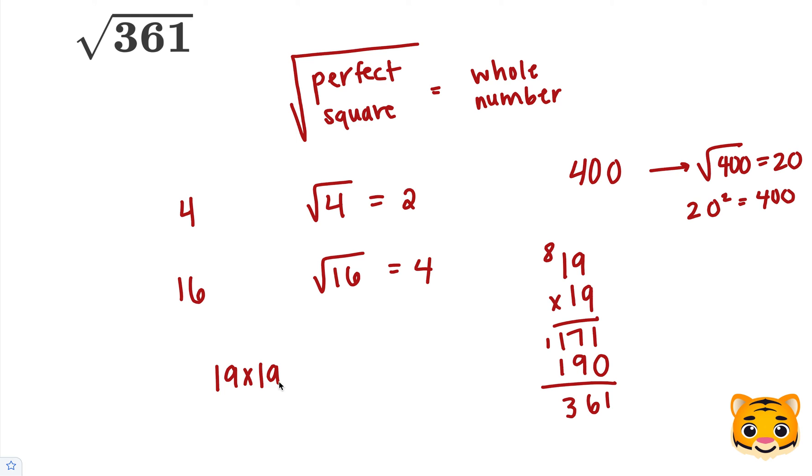This means that 19 times 19, or 19 squared, is equal to 361.